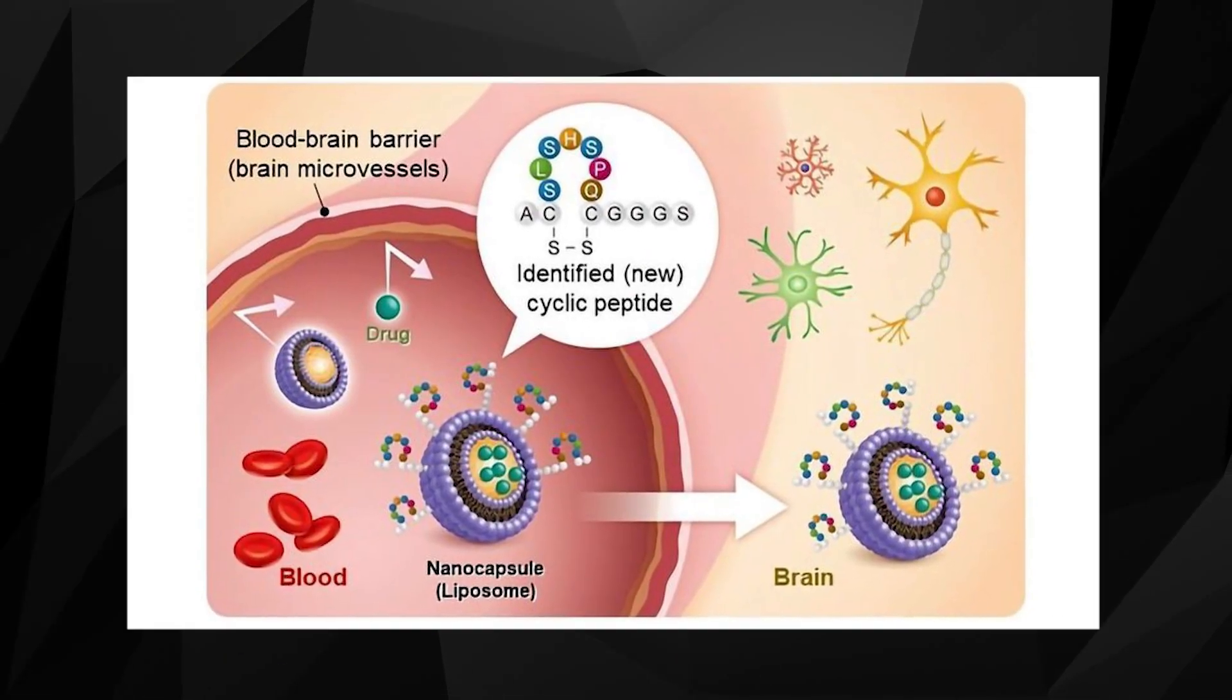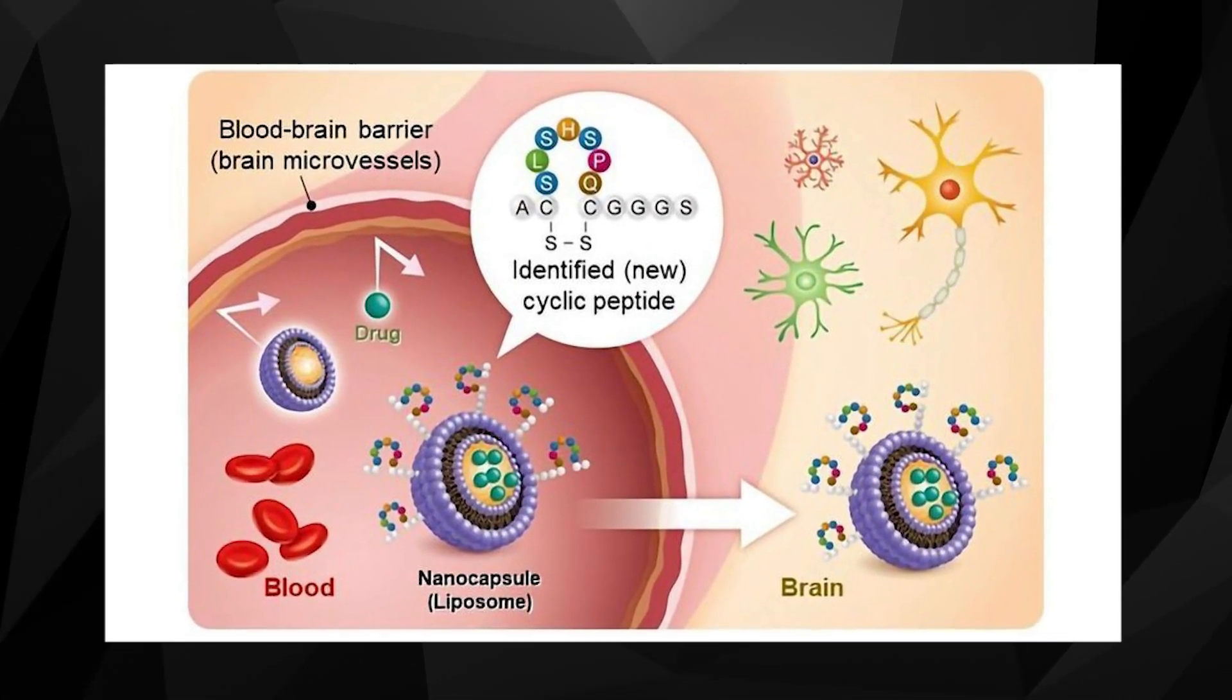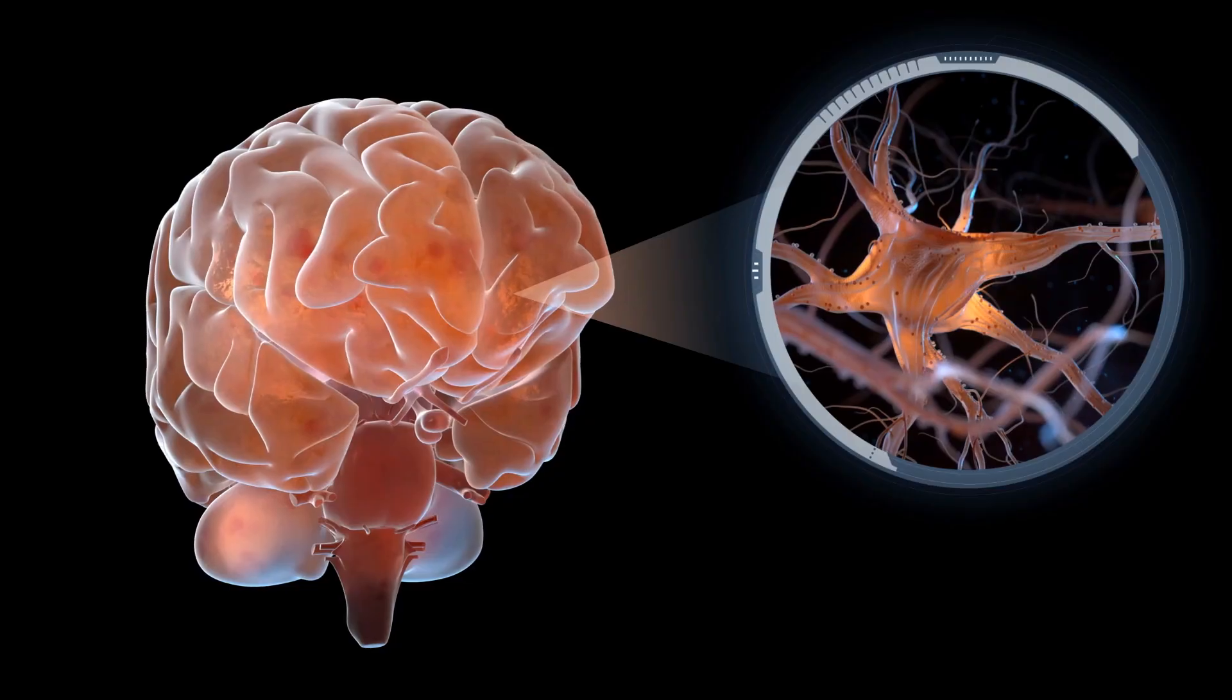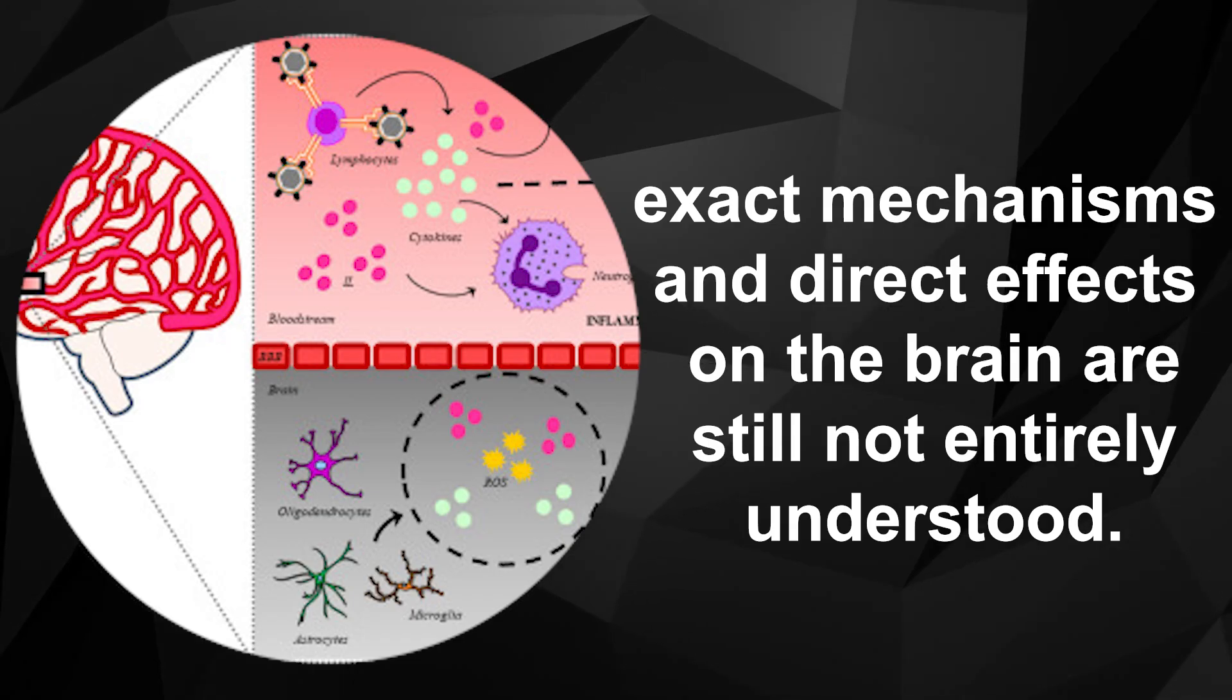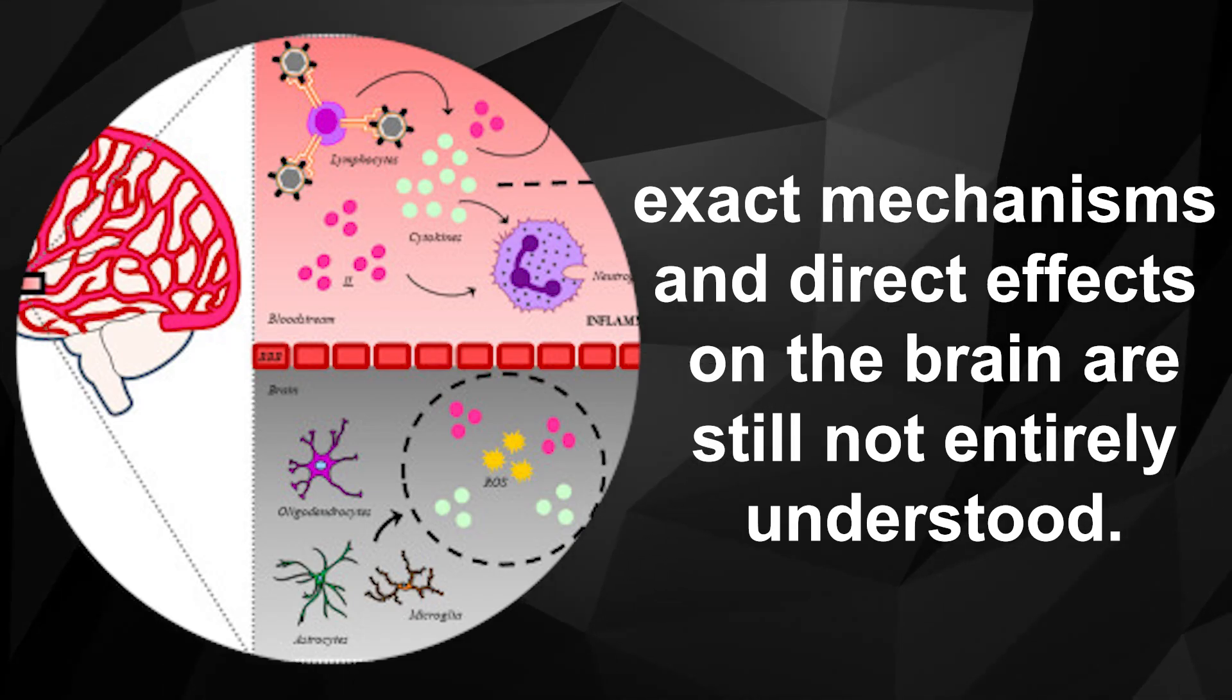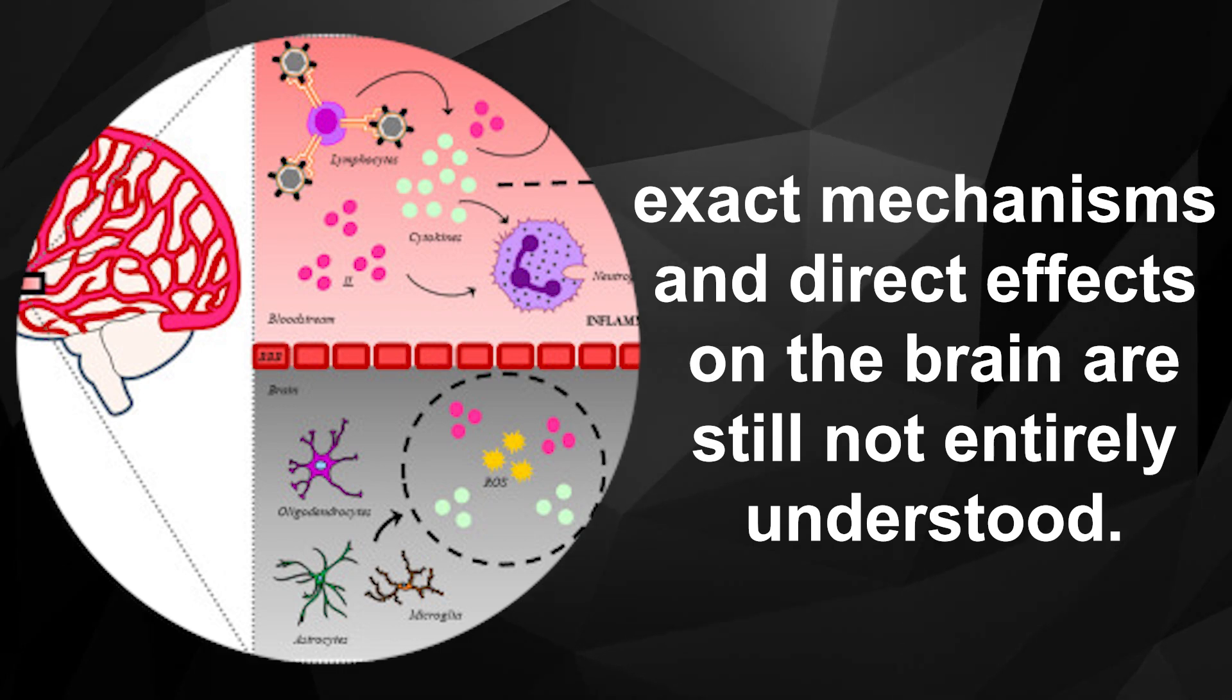Lastly, some studies suggest that PPIs might cross the blood-brain barrier and potentially influence brain function directly. However, the exact mechanisms and direct effects on the brain are still not entirely understood.